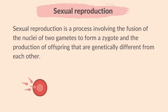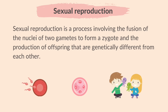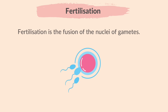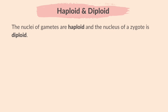Moving on to sexual reproduction. Sexual reproduction is a process involving the fusion of the nuclei of two gametes or sex cells to form a zygote — that is the fertilized egg cell — and the production of offspring that are genetically different from each other. Fertilization is the fusion of the nuclei of gametes. In animals, the sex cells are sperm and ovum, and in plants, the sex cells are pollen nucleus and ovum.